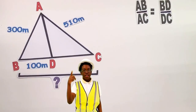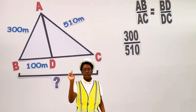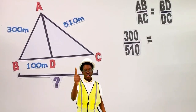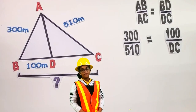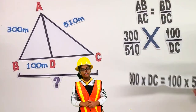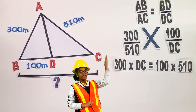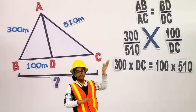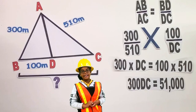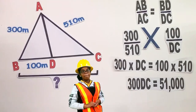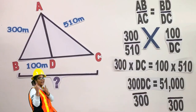Yes, because of that, we have the proportion 300 over 510 equals 100 over DC. Cross multiply: 300 times DC is equal to 100 times 510. 300 DC is equal to 51,000. Isolate DC by dividing both sides by 300. DC is equal to 170.